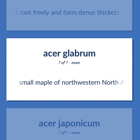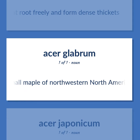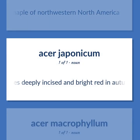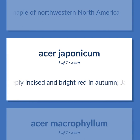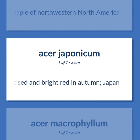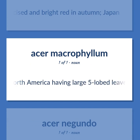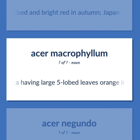Small maple of northwestern North America, leaves deeply incised and bright red in autumn. Apple of western North America having large five-lobed leaves orange in autumn.